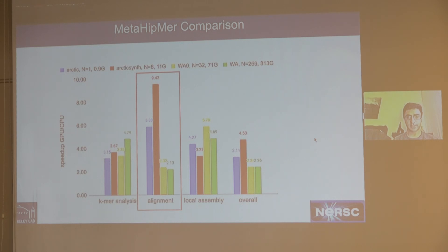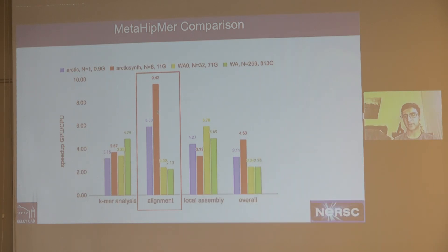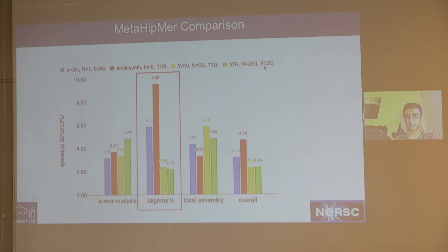Looking at the performance comparison — focus on the plots in the red box — with a small number of nodes, for example an 8-node run with an 11 GB metagenome dataset, we get about 9.4x performance improvement in the alignment stage. As we increase the number of nodes, the amount of work available per GPU drops dramatically, and we see about 2x performance improvement when using 256 nodes processing an 850 GB dataset. These performance numbers are from supercomputers where each node has V100 GPUs.